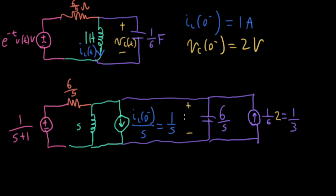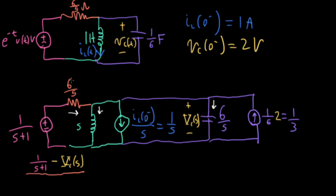I'm going to measure the voltage here as capital V_C(S) in the Laplace domain. I can write down a Kirchhoff current law equation for this node. Imagining a current flowing in, a current flowing out through the inductor, out through the capacitor, and out on the right — and a current flowing in from the current source on the right. Starting here, I'll have (1/(S+1) − V_C(S)) divided by the resistance, giving 5 in the numerator and 6 in the denominator.